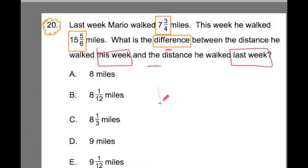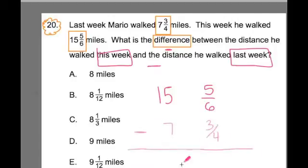So this week it was 15 and 5 sixths. And last week it was 7 miles and 3 fourths. And we're doing a subtraction problem, so I'm going to be subtracting these two. And that's going to get me the difference. It's very important that you have that structure, that you know it's a subtraction problem, and you know what you're subtracting from what.